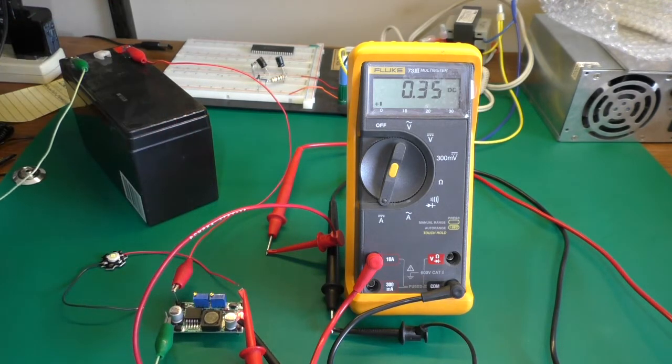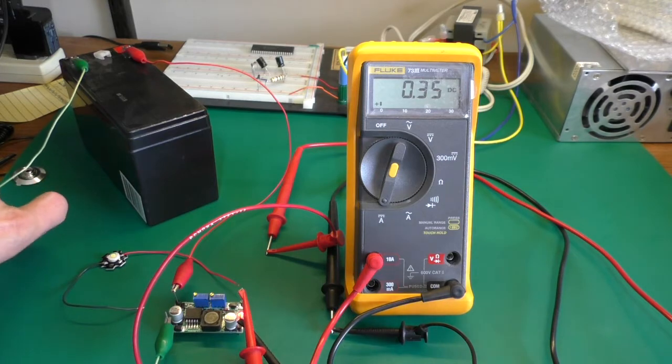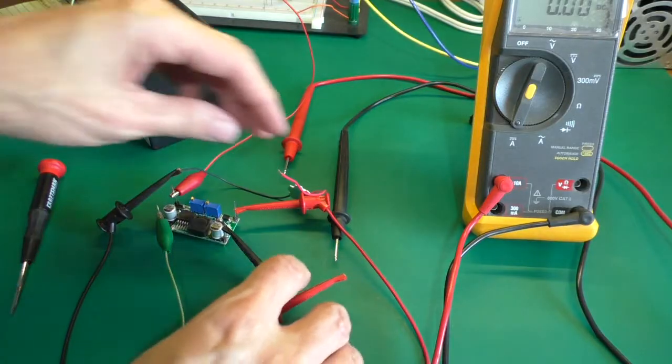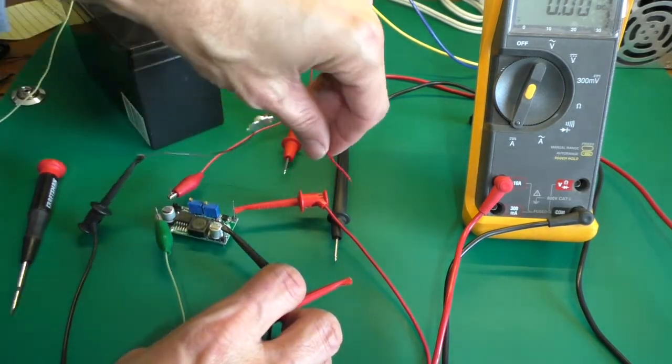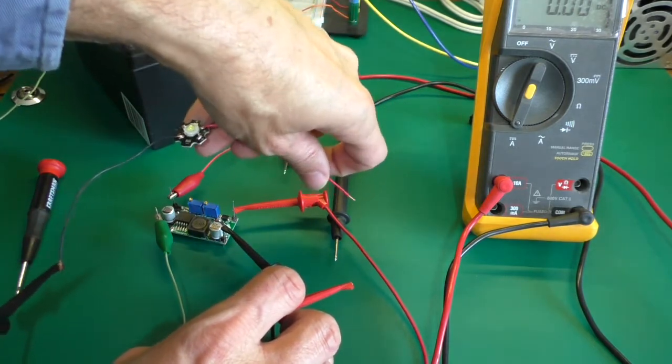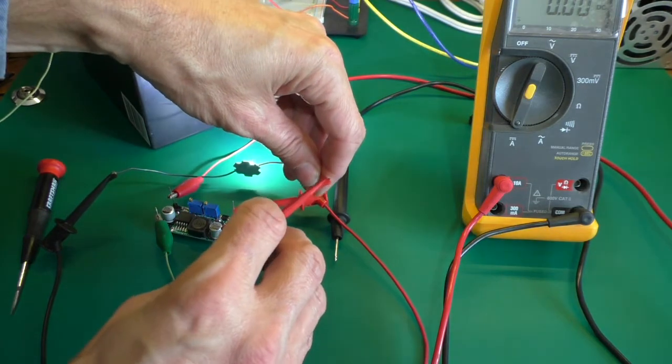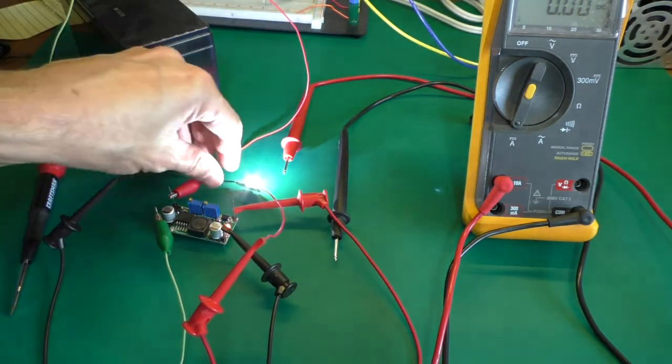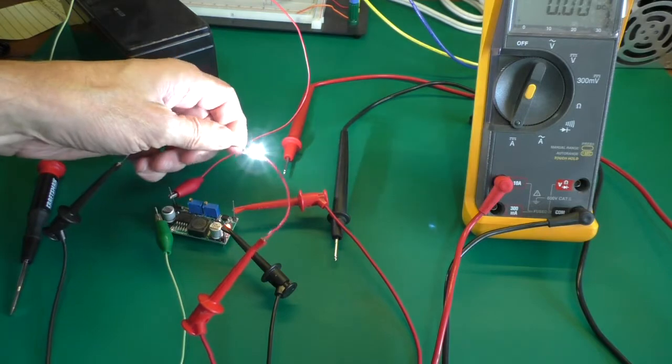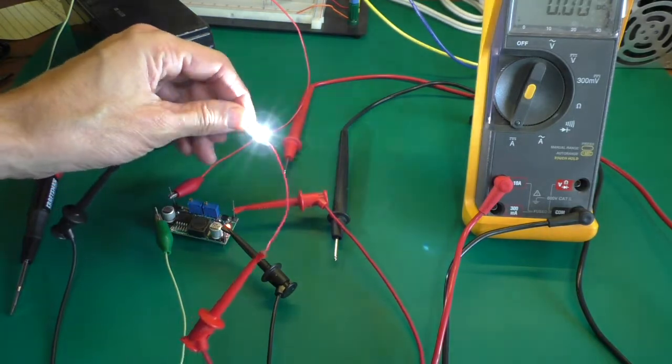There we are and now we'll try the LED. Now I'm going to replace the voltmeter with the LED. I'll point it away from the camera so it doesn't mess everything up. And it's got some pretty good light output.